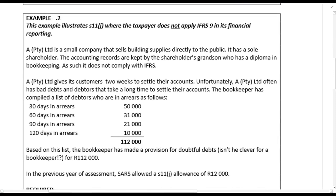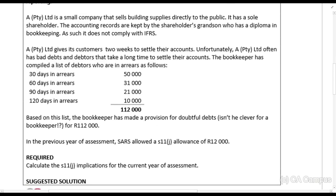Example 2: AP to I Limited is a small company selling building supplies directly to the public. It has a sole shareholder and its accounting records are kept by the shareholder's grandson, who has a diploma in bookkeeping. As such, it does not comply with IFRS. AP to I Limited gives its customers two weeks to settle accounts, but often experiences bad debts and slow-paying debtors.